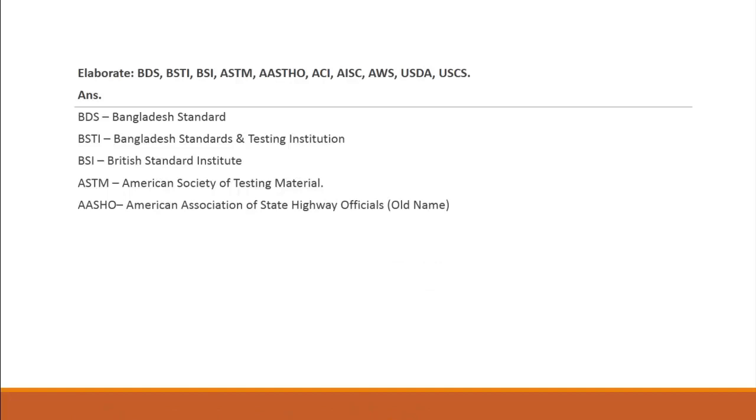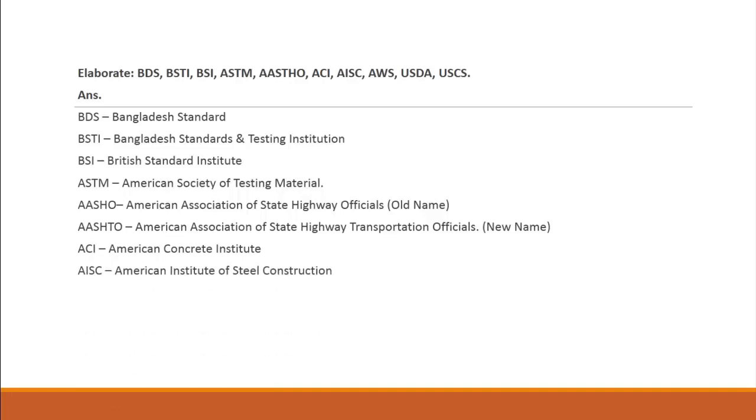AASHTO, the old name is American Association of State Highway Officials. The new name is American Association of State Highway and Transportation Officials. ACI, American Concrete Institute. AISC, American Institute of Steel Construction. AWS, American Welding Society.